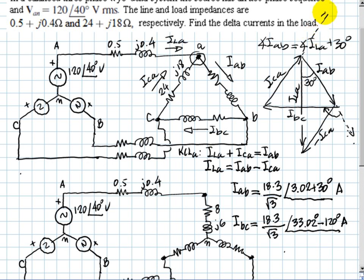And what about ICA? Well, ICA has the same magnitude, but its phase is plus 120 degrees with respect to IAB. So I can write ICA has the same magnitude, 18.3 divided by root 3, and the phase is 33.02 plus 120 degrees. And those are the three currents that are the answers to this exercise.